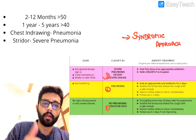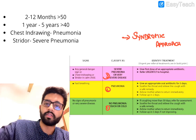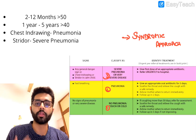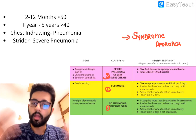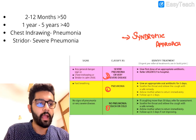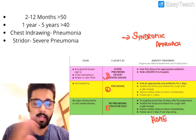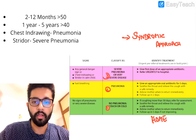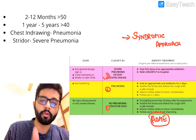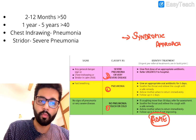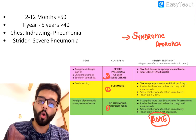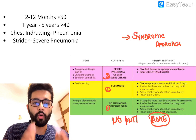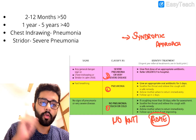No pneumonia is green — usually an URTI where the child comes with cold and cough but no other symptoms. For these patients, home-based care is given: home remedies, cough syrups, and nasal decongestants. There are no antibiotics. The mother is advised to follow up if symptoms worsen or danger signs appear. Danger signs include seizures, inability to feed, lethargy, reduced activity, and malnutrition.